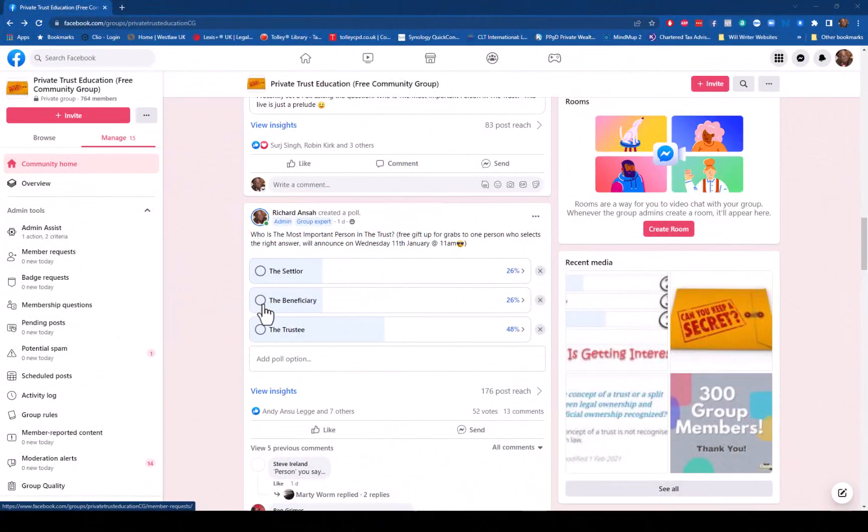So the question was who is the most important person in the trust. As you can see, the final result was the trustee at 48%, which is only 50% of the votes, and that was actually the correct answer I was looking for.